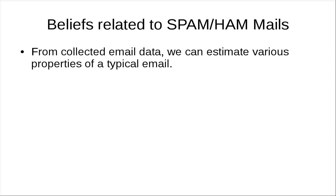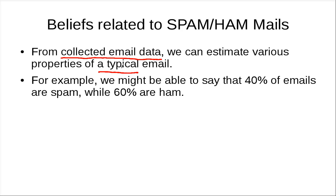So we start by writing down the beliefs that we have for spam and ham mails. We can do that if we have collected email data — there are some available on the internet. With this data, we can estimate various properties of a typical email. For example, we might say that 40% of emails are spam, while the rest 60% are ham — maybe this number is wrong, but this is just for an example.